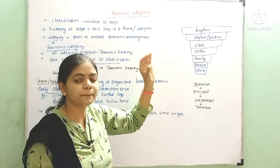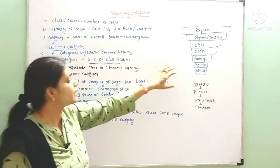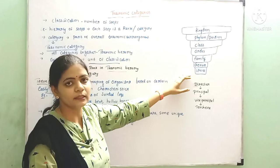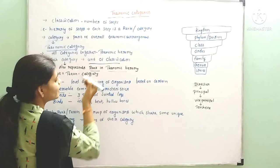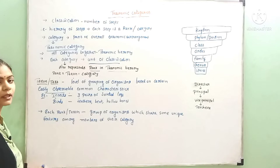Each category is a unit and part of the classification. Each category also represents a rank. In the taxonomic hierarchy, different ranks are given — some are in the topmost rank, some are in the least rank. These categories represent the rank in the taxonomic hierarchy. Rank, taxon, and category are all the same.